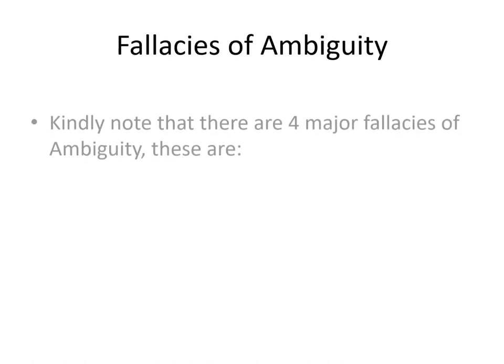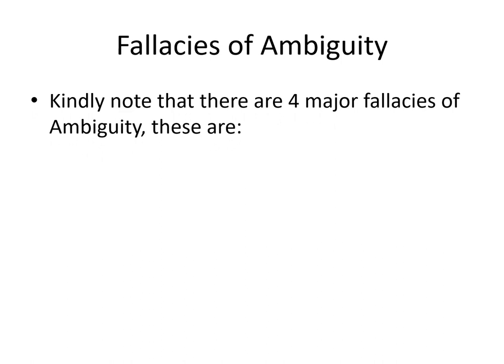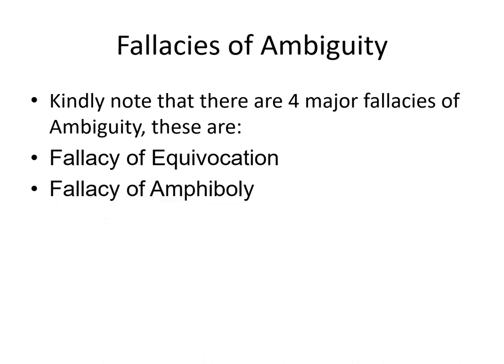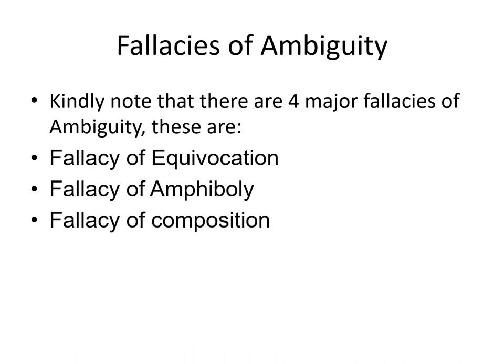Fallacies of ambiguity: there are four major fallacies of ambiguity — the fallacy of equivocation, fallacy of amphiboly, fallacy of composition, and fallacy of division.